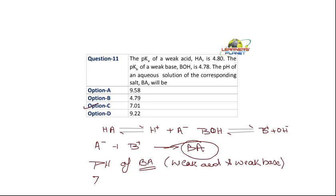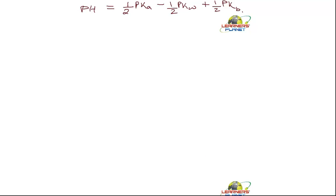But I will tell you how to find out. Now, the equation for the pH of the salt solution of weak acid and weak base is equal to half of pKa plus half of pKw minus half of pKb. Or, it should be minus over here and this should be plus.